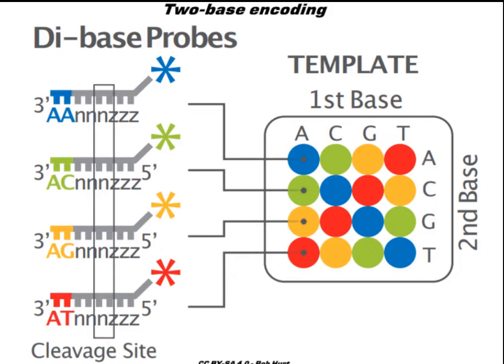Primers hybridize to sequence adapter at the library template. Each base was acquired by two labeled oligonucleotides, which have one of 16 specific DNA nucleotides.